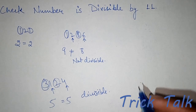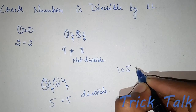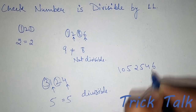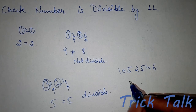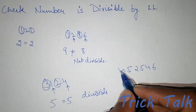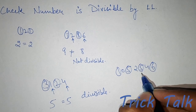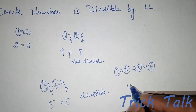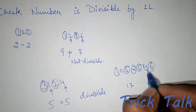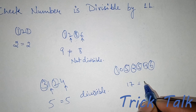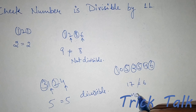Let's also check with another example: 1052546, to check whether it is divisible by 11. We sum the alternate digits 1, 5, 5, and 6 — the sum comes to be 17. And 0, 2, and 4 — the sum comes to be 6. The sums are not equal, so the number is not divisible by 11.